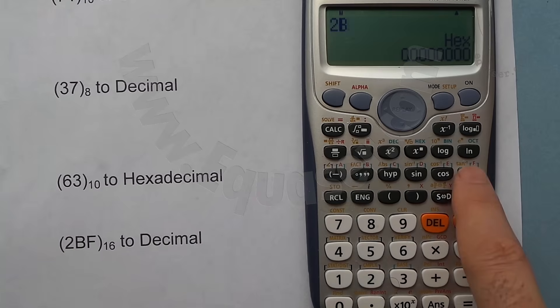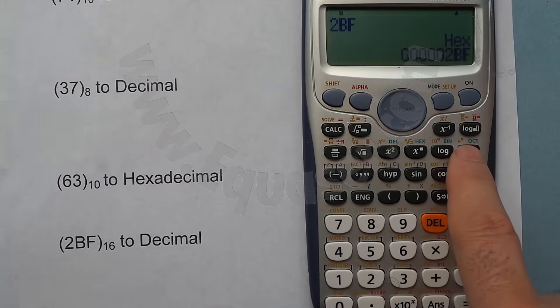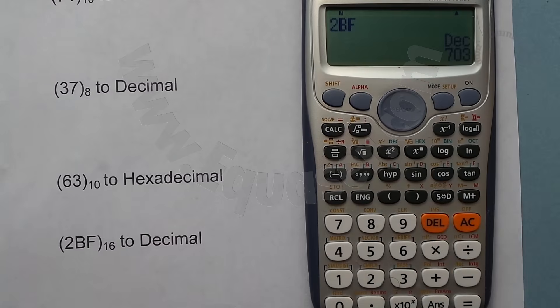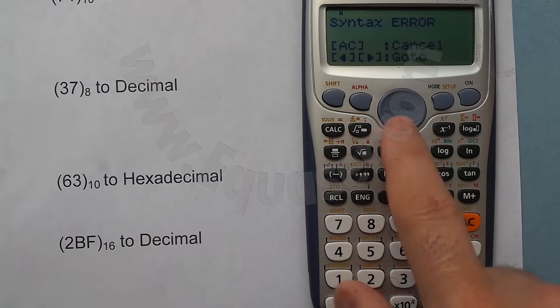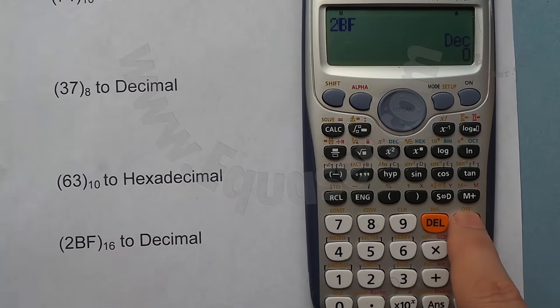And then F. That's 2BF hex. So you press any button and convert it to anything you want to get decimal. That's 703. Now I press equal sign. I got error because the value is not decimal.